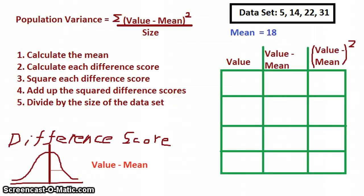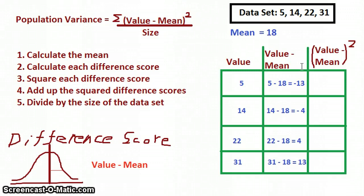Step two: calculate each difference score. A difference score is just the difference between the value and the mean. The more variability that exists within a distribution, the bigger the difference scores. If all the scores are close to the mean, our difference scores will be small; if the difference scores are big, that says there's a lot of variability. Using a table: 5 minus 18 is negative 13, 14 minus 18 is negative 4, 22 minus 18 is positive 4, and 31 minus 18 is positive 13.